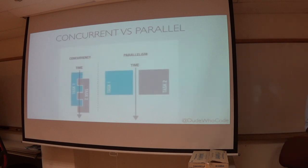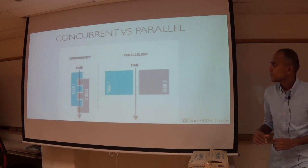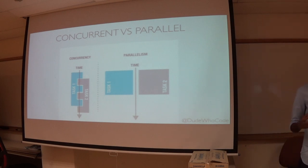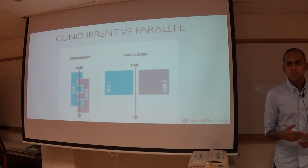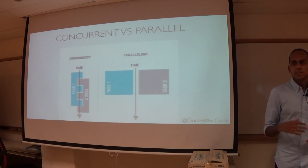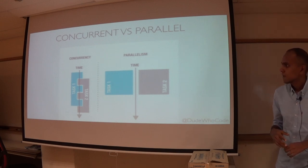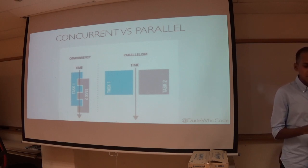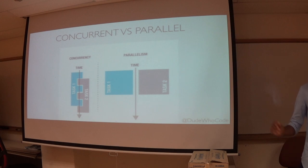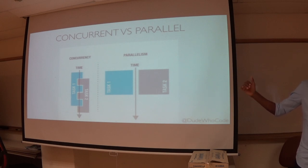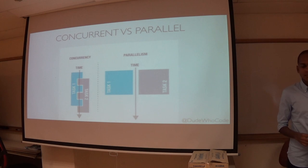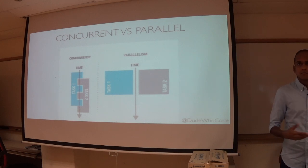Parallelism is throwing your tasks to your resources — the CPU cores — and executing each task on its own core. In concurrency, if there are two tasks and task one has a blocking call, it will start executing task two; when task two encounters a blocking call it comes back to task one, switching back and forth based on the blocking calls in each task. Blocking calls are mostly IO: file IO, HTTP calls, or requests to a database.